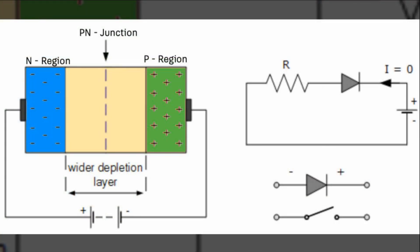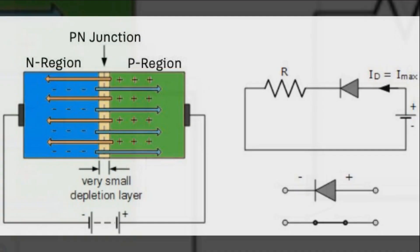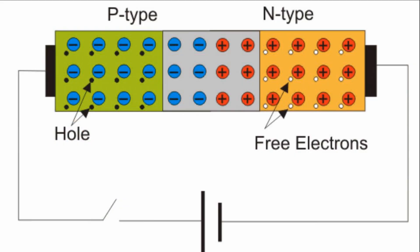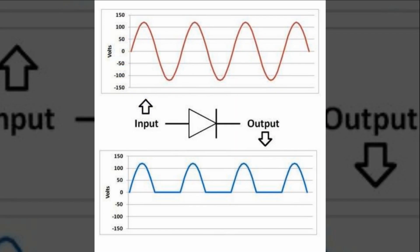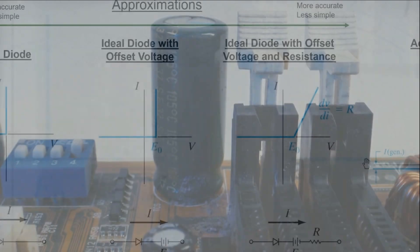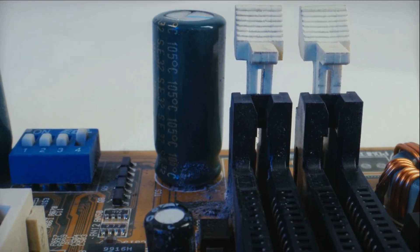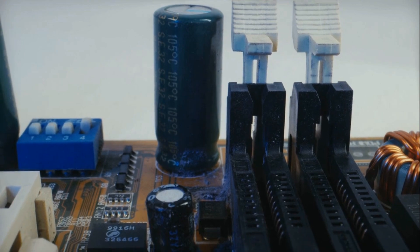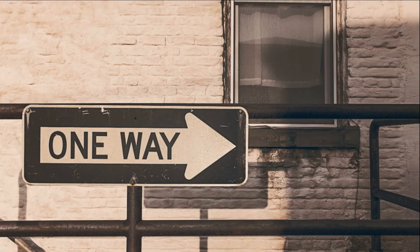This behavior is due to its unique property of having low resistance in one direction and high resistance in the other. It's as if the diode is specifically designed to say a big yes to current flowing in one direction and affirm no to the opposite. This directional behavior makes diodes incredibly useful in various electronic circuits — just like a one-way street allowing traffic to flow in only one direction.